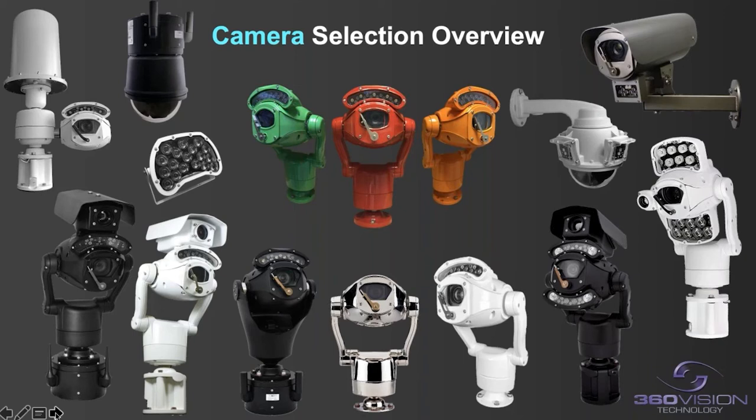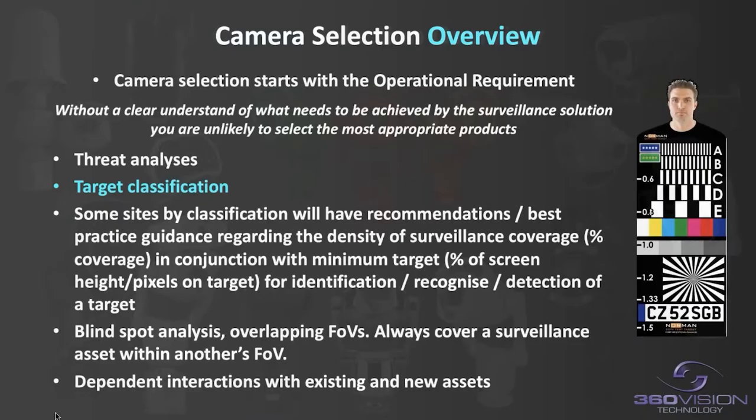We're going to look over the next three slides at camera selection and what's to be considered when selecting a camera. There are two main themes: understanding what you need the camera to do, and understanding what the camera is capable of. The very first thing is to have an operational requirement. If you don't have a clear understanding of exactly what you wish to achieve, you're never going to get a desirable result. An operational requirement is the first step in scoping any camera selection.